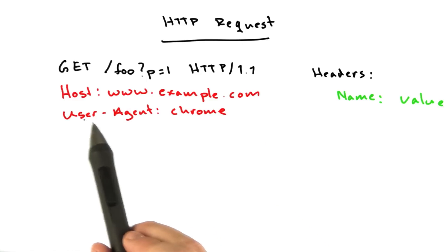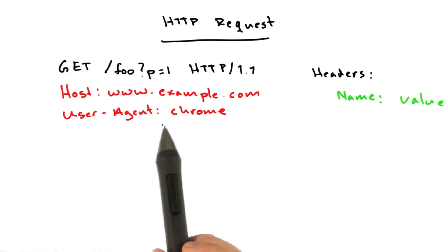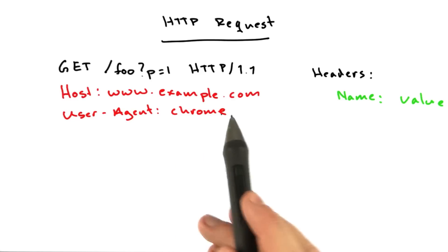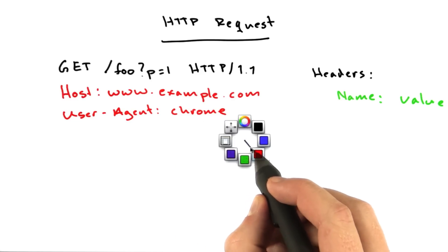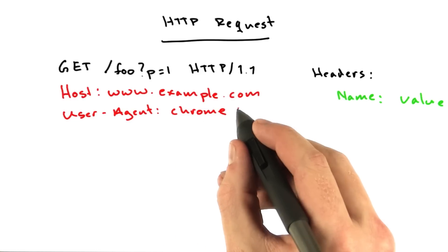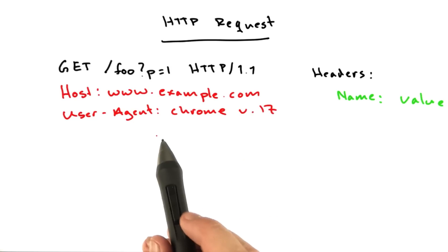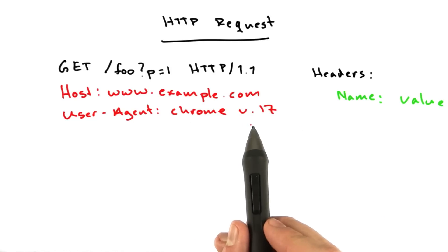The next header is called user agent. This describes basically who is making the request — generally your browser. Your browser will put its name in there, along with some version info and things like that. This is really helpful for the server so they know what type of machine is making the request.